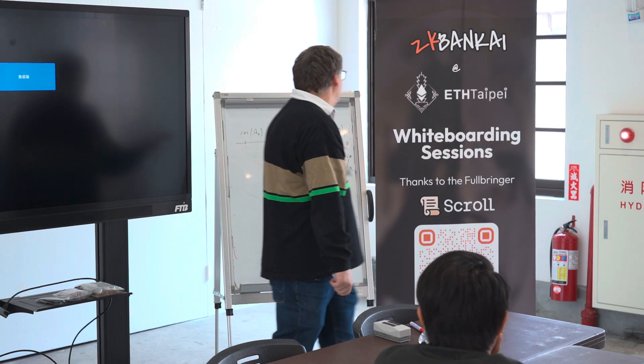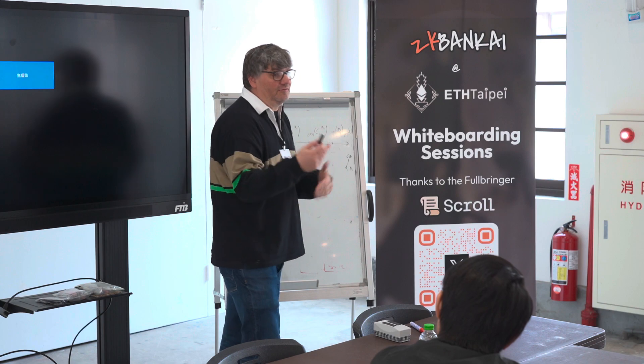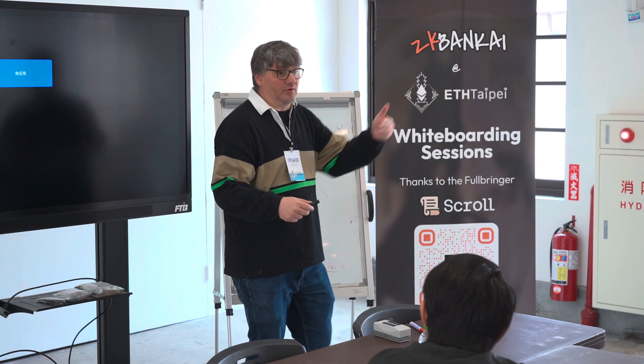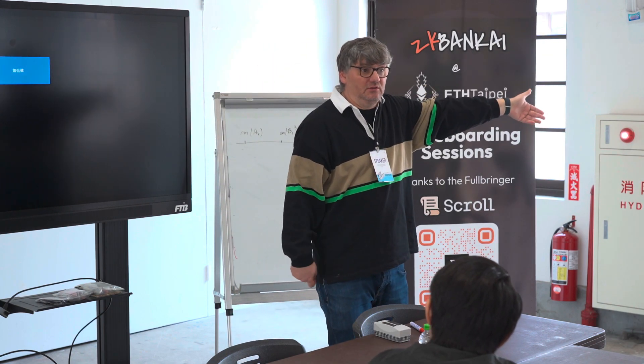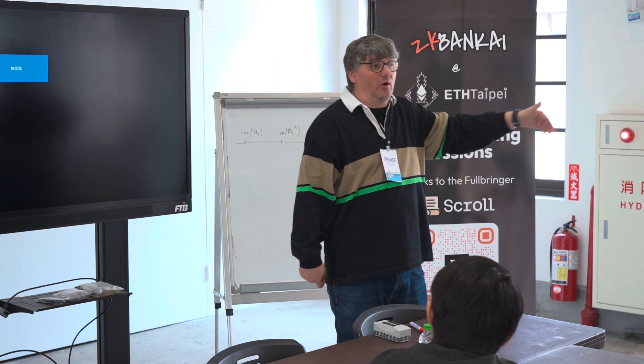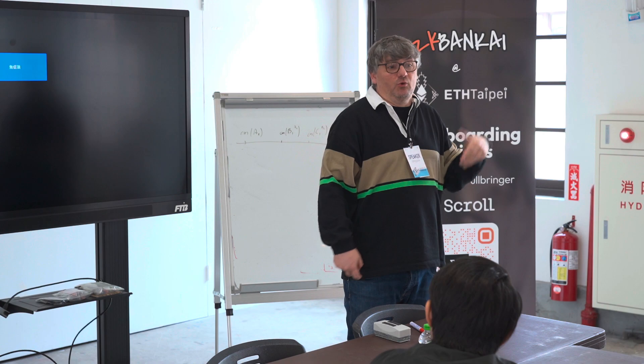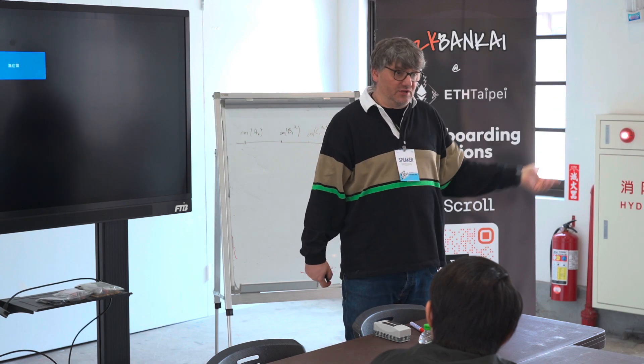So if you are chain B, you have two options: either run a full node of chain A, or just wait for chain A to generate the proof.